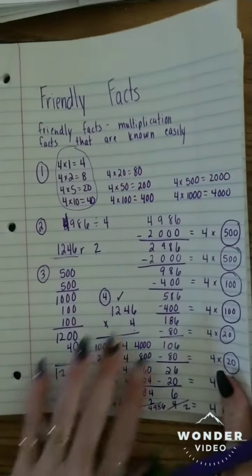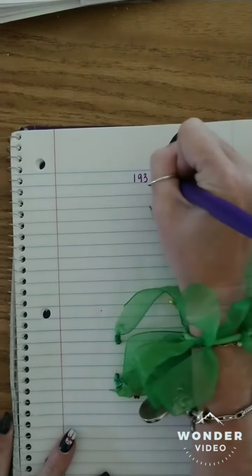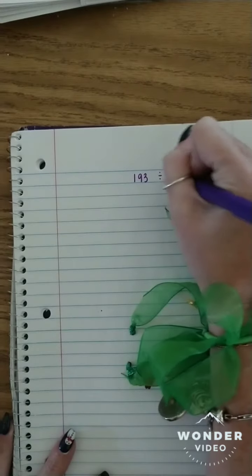Alright, I hope this video helps. I'm going to actually do one more example, a little smaller example, just so you can see. And maybe it might be better to try with a smaller one to get some practice. So let's do 193 divided by, let's say 8.